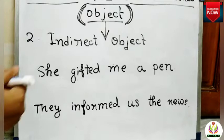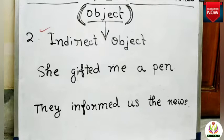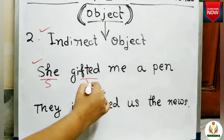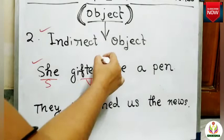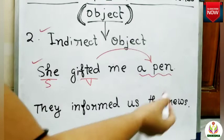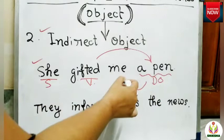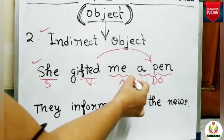The second type is indirect object. To find an indirect object in a sentence, there must be a direct object present. Some verbs need more than one object to complete their meaning. For example, 'She gifted me a pin.' She is the subject, gifted is the verb. If I ask 'She gifted what?' — she gifted a pin. So 'a pin' is directly receiving the action gifted, making it the direct object.